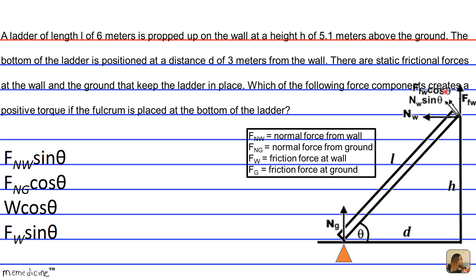So if we form like a triangle, theta would be right here in this little corner. That's why this is the adjacent side. So that's one of the two possibilities of forces that create a counterclockwise rotation or a positive torque.